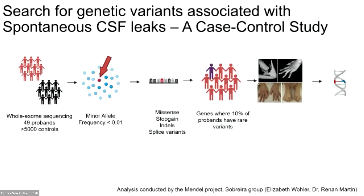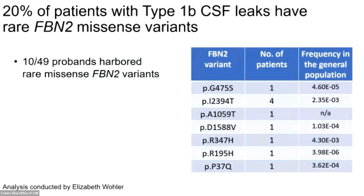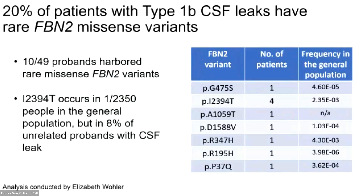We kept genes where at least 10% of the probands had rare variants, filtered for genes that could possibly be associated with connective tissue phenotypes, and ended up with a variant list. When we assessed this list, we found that 20% of patients with type 1b CSF leaks have rare missense variants in the gene fibrillin 2. Interestingly, one mutation, I2394T, occurs in 1 out of 2,350 people in the general population, but in 8% — about 1 in 12 — of our patients with type 1b CSF leaks.